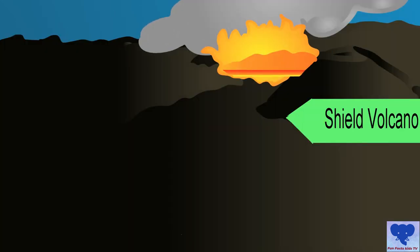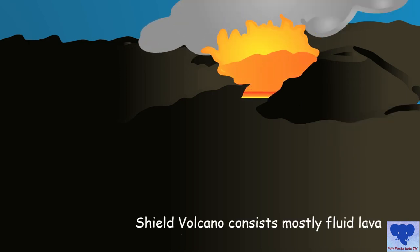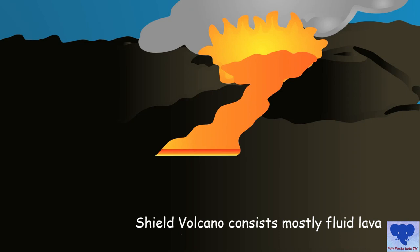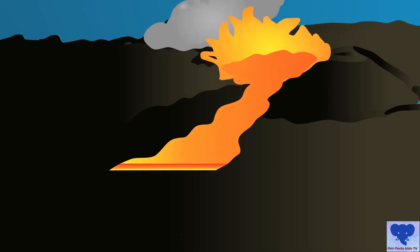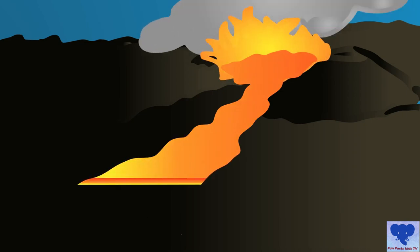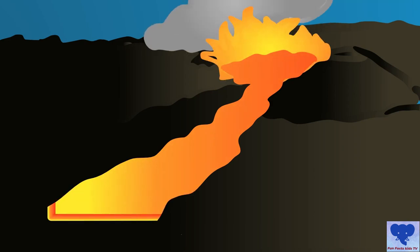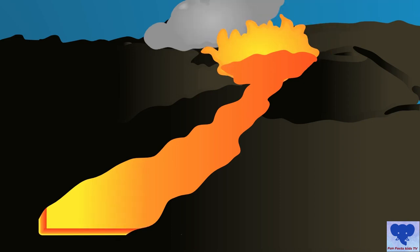Shield volcano is a type of volcano built entirely or mostly from fluid lava vents. They are named like this because when viewed from above, you can see how massive and imposing they are, like a warrior's shield.